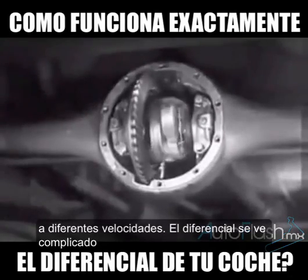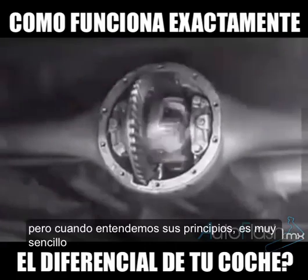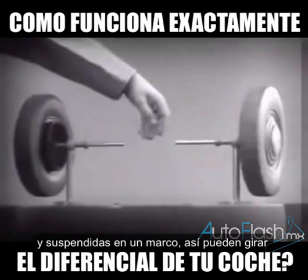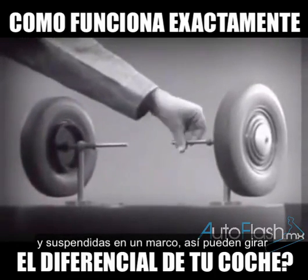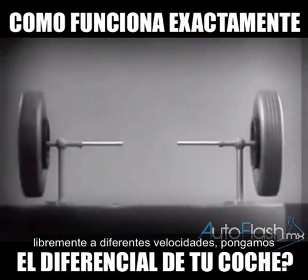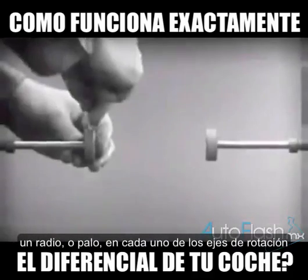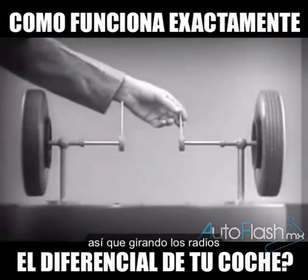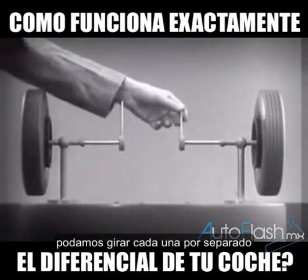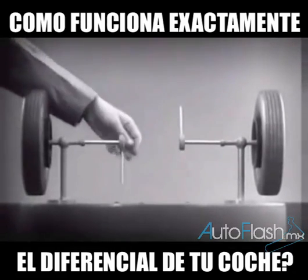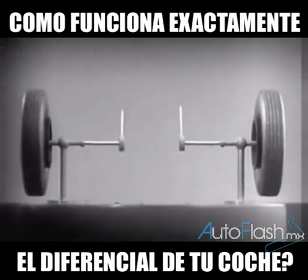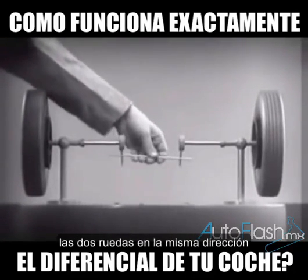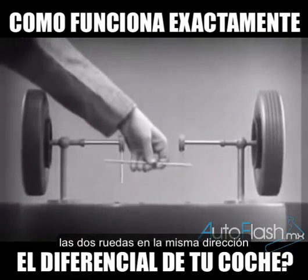The differential looks complicated, but once we understand its principle, it is amazingly simple. These two wheels are mounted on separate axles and supported by a frame so that they can revolve freely at different speeds. Let's fasten a spoke on the inner end of each axle so that by turning the spokes, we can turn each wheel separately. With a bar or cross piece, we can turn both wheels in the same direction at the same rate of speed.